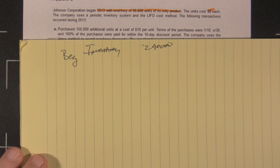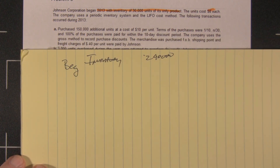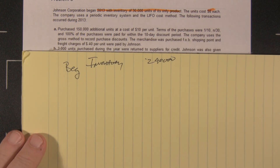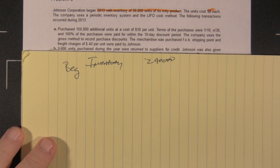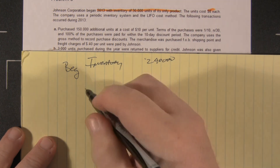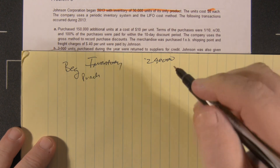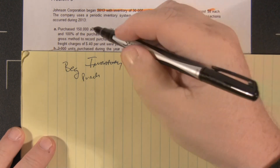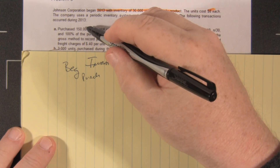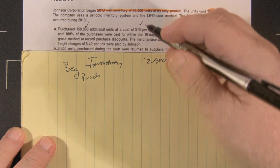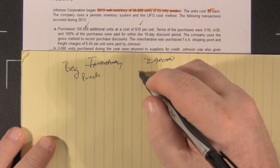The following transactions occurred. We purchased 150,000 units at $10 per unit. That's a purchase of 150,000 units at $10 per unit — $1.5 million.